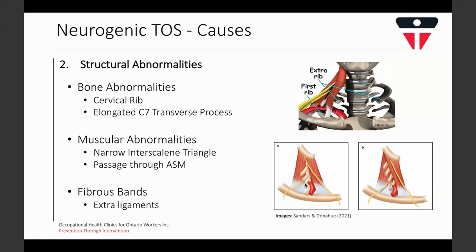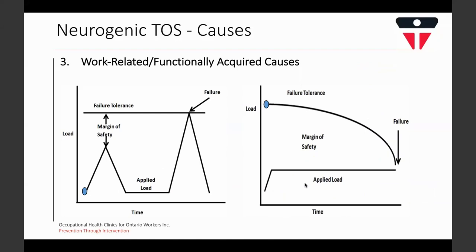The third cause of TOS is from work-related and functional causes, which generally develop over time as a result of chronic and persistent movements and postures. An acute trauma occurs when a single applied load exceeds the level of tolerance and causes injury. Cumulative trauma tends to lower structural tolerance as a result of chronic and persistent load application over weeks, months, or even years, to the point where tissues become unable to sustain what was once a normal load.